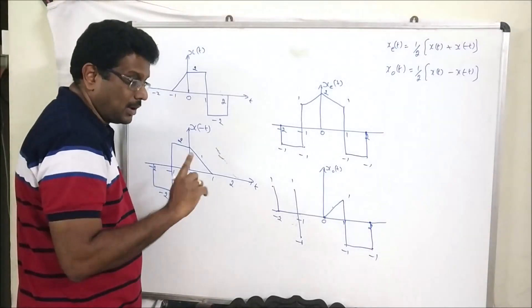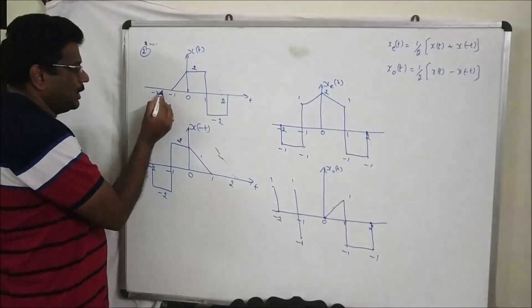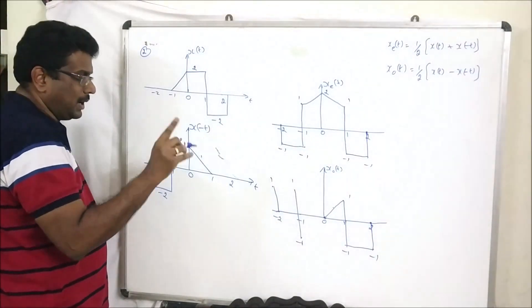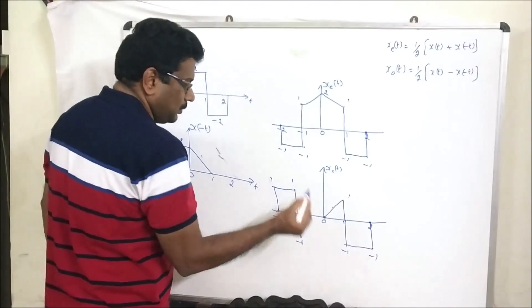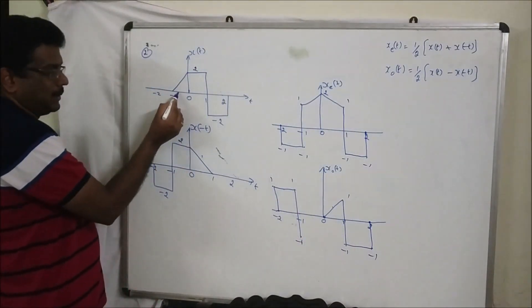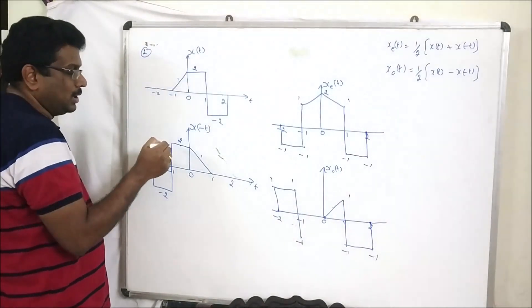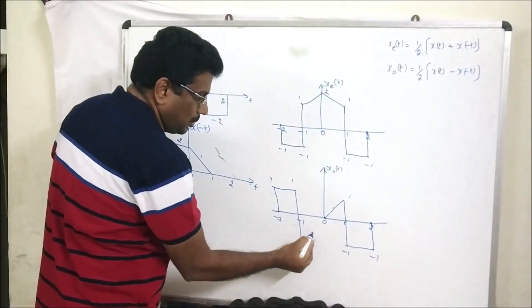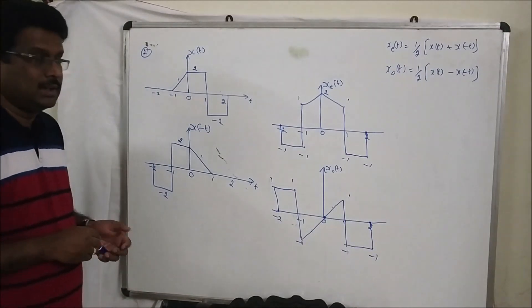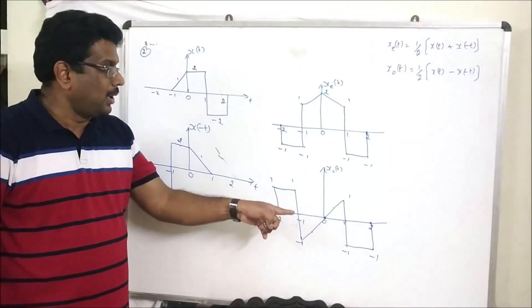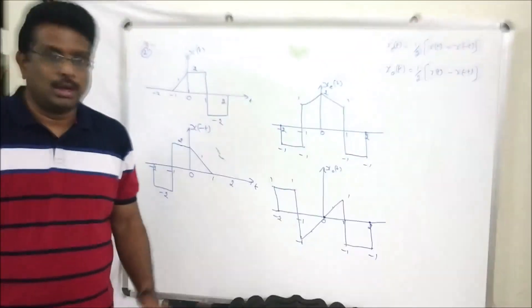Mirror image of the odd signal. At this location: 0 minus minus 2 becomes plus 2, divided by 2 equals 1. At the next location: value is 1 here and 2 here. Subtraction: 1 minus 2 equals minus 1, divided by 2 equals minus 1. This is the odd component and the even component of the given signal.